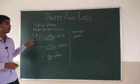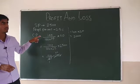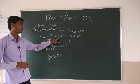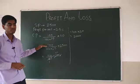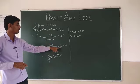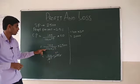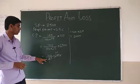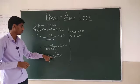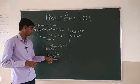We wrote the formula of cost price: 100 over (100 + profit%) into selling price. We put the given values: profit percent is 25% and selling price is 2500. 100 plus 25 equals 125, so 100 over 125 multiplied by 2500, which gives Rs 2000.